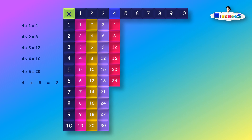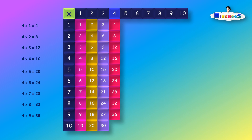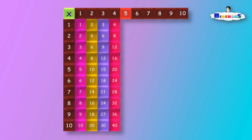4 times 6 is equal to 24. 4 times 7 is equal to 28. 4 times 8 is equal to 32. 4 times 9 is equal to 36. 4 times 10 is equal to 40. Multiplication of 5.